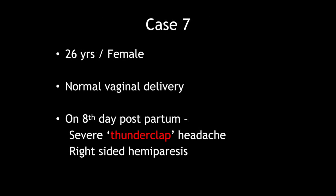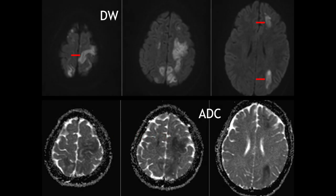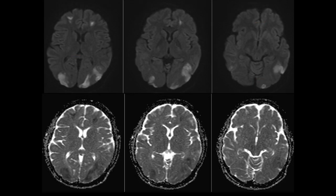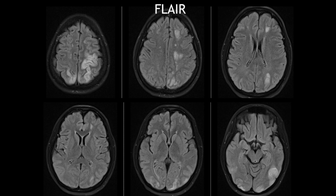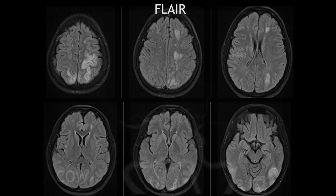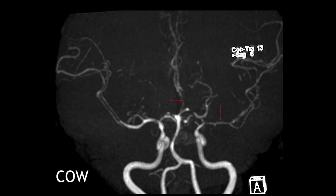A 26-year-old female had a normal vaginal delivery, but on the 8th postpartum day she developed severe thunderclap headache followed by right-sided weakness. MRI of the brain showed multiple discrete and few confluent areas of restricted diffusion bilaterally, most of them in watershed territory areas. They did not show hemorrhage and were hyper-intense on FLAIR, with a few showing mild mass effect. Findings could suggest embolic or cardioembolic stroke, but MR angiography was very revealing.